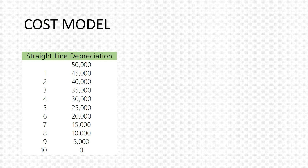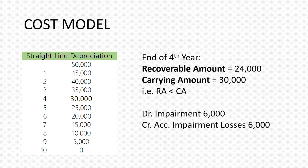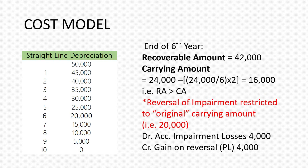Assume an asset purchased at a cost of $50,000 with a useful life of ten years and zero residual value. At the end of the fourth year, the carrying amount should be $30,000 by calculation, but the recoverable amount is only $24,000. Since the recoverable amount is less than the carrying amount, we debit impairment — a profit and loss account item — by $6,000 and credit accumulated impairment loss by $6,000.